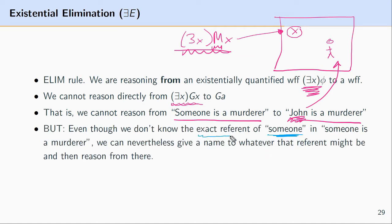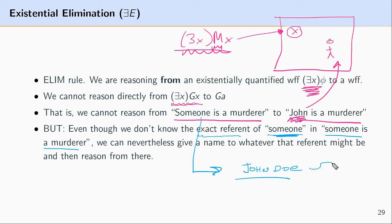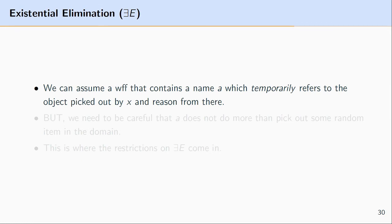However, even if we don't know the exact referent of 'someone' in 'someone is a murderer,' we might temporarily give a name to that individual and reason from that. We don't know the referent, but we might use a name temporarily — let's say John Doe — that has the role of picking out some random individual we don't know anything about, other than the fact that we ascribe to this individual the property of being a murderer. This use of a name that temporarily refers to an object is one of the features of existential elimination.